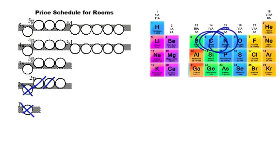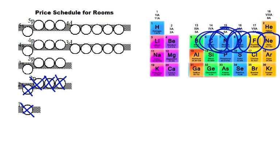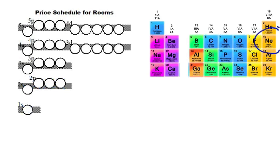For nitrogen with seven electrons, one more goes into the third 2p room. When we get to oxygen with eight electrons, the next electron also goes into the 2p, but now we start doubling up. For fluorine we double again, and finally for neon with ten electrons we fill all three 2p rooms completely — that's where all ten electrons go.